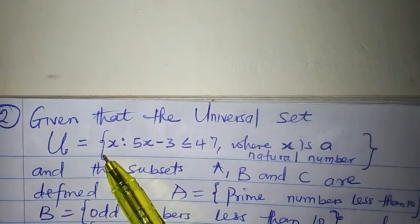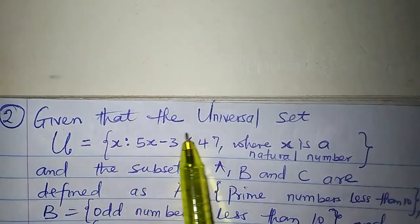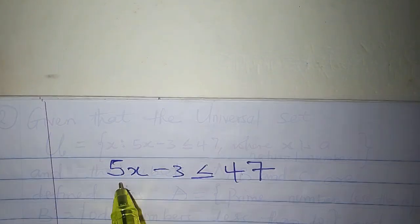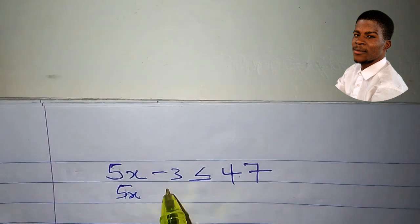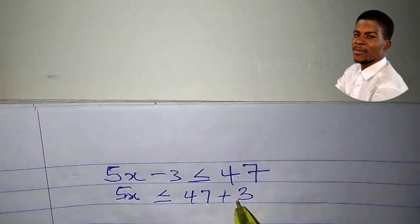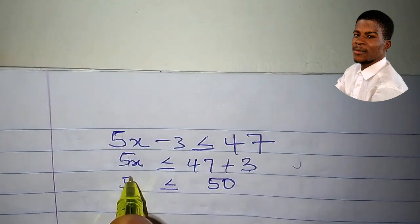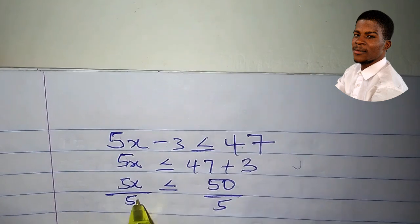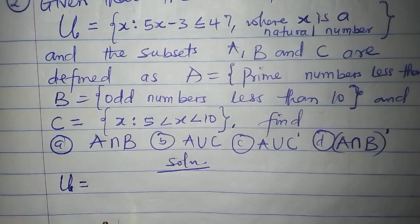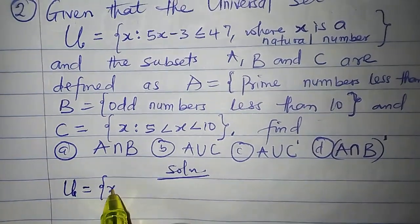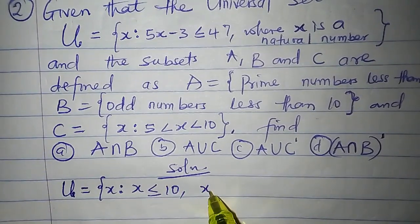Before we can determine any of these, let us first write out the elements in each of the sets, including the universal set. We have to solve this inequality first. Let's solve: 5X minus 3 less than or equal to 47. Collecting like terms, we have 5X less than or equal to 47 plus 3. The 3 crosses and turns positive. 47 plus 3 is 50. Dividing both sides by 5, we have X is less than or equal to 10.